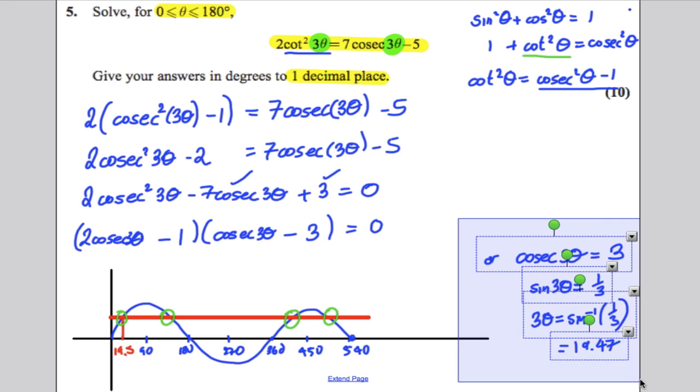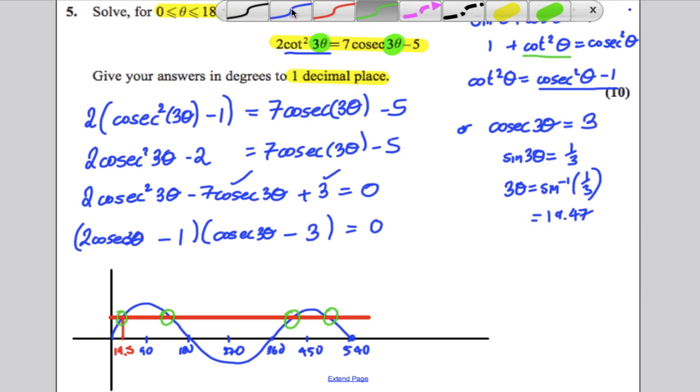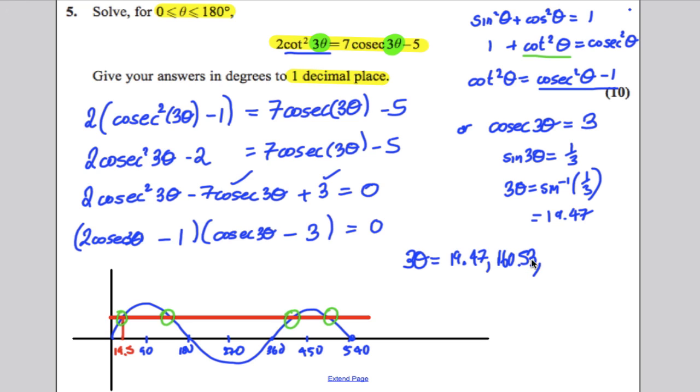So, I'm just going to move this up here. So, our three theta is therefore going to be 19.5. Actually, let's keep it to, because we want it to one decimal place, let's write everything to two decimal places and round only at the end. So, 19.47, 180 minus 19.47, which is 160.53, 360 plus 19.47, which would be 379.47. And the last one would be 540 minus 19.47, which would be equal to 520.53.